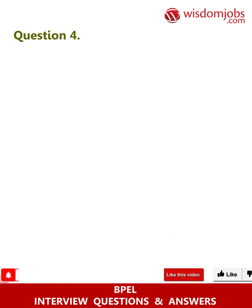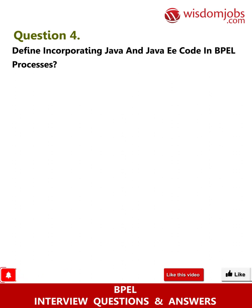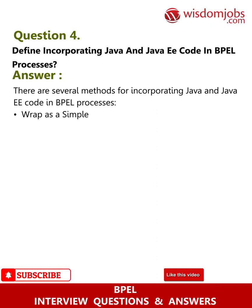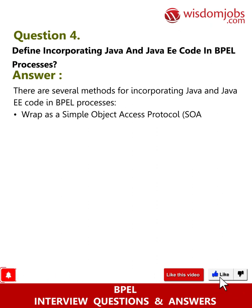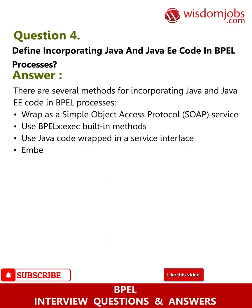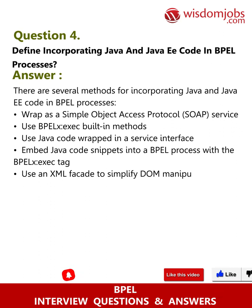Question 4: Define incorporating Java and Java EE code in BPEL processes. Answer: There are several methods for incorporating Java and Java EE code in BPEL processes: wrap as a Simple Object Access Protocol (SOAP) service; use BPEL's built-in methods; use Java code wrapped in a service interface; embed Java code snippets into a simple process with the BPEL exec tag; use an XML facade to simplify DOM manipulation.